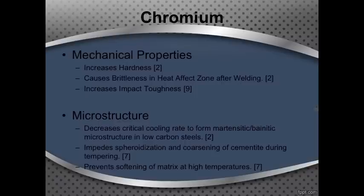These microstructures are desired mostly because the martensite removes welding stresses and the lower bainite can provide resistance to tempering and welding, as well as resistance to brittle fracture. Chromium can also impede the spheroidization and coarsening of cementite during tempering, and has been found to prevent the softening of a matrix during high temperature processing.